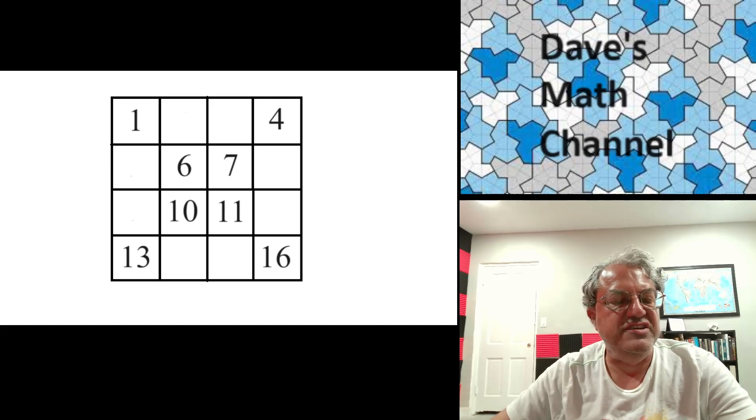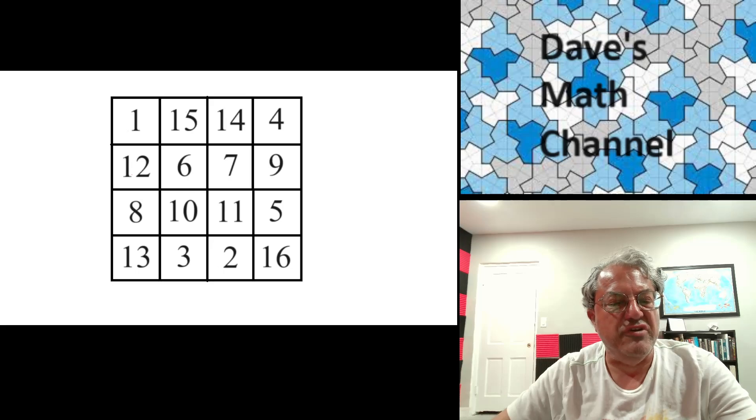For instance, 16 goes to the top left, but there's already a 1 there, so we leave that alone. For the ones that don't have a number, we fill in the number we get when we count backwards. When we do that, we get this square, which is a magic square.